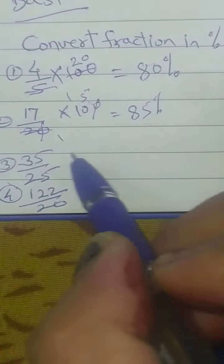Here you have to write 85%. Here again multiply by 100, 25 ones, 25 fours, then 35 fours.